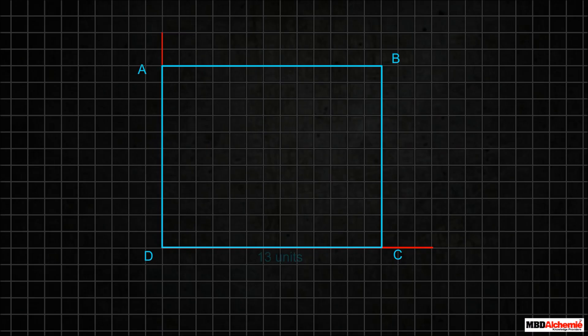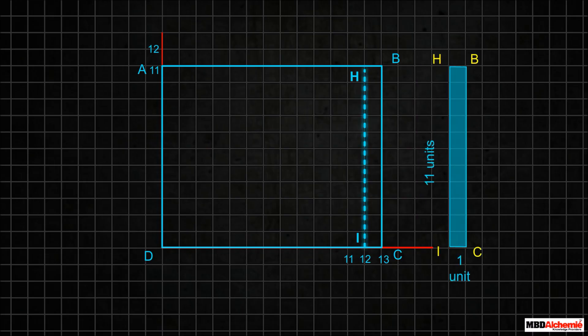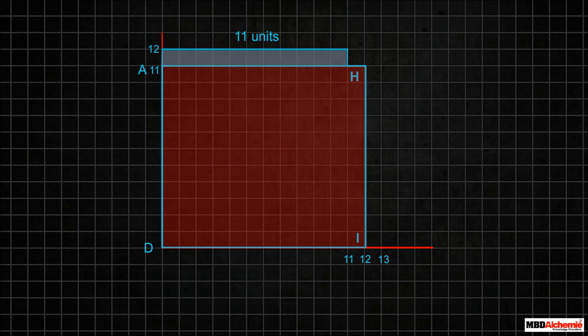Let us see another property of squares. Consider a rectangle ABCD of length 13 units and breadth 11 units. Now, transform this rectangle into a square by cutting a rectangle of 1 unit breadth along the breadth BC of rectangle ABCD, such that we get a rectangle HBCI. Now, move and fix it along the length AH of rectangle AHID.